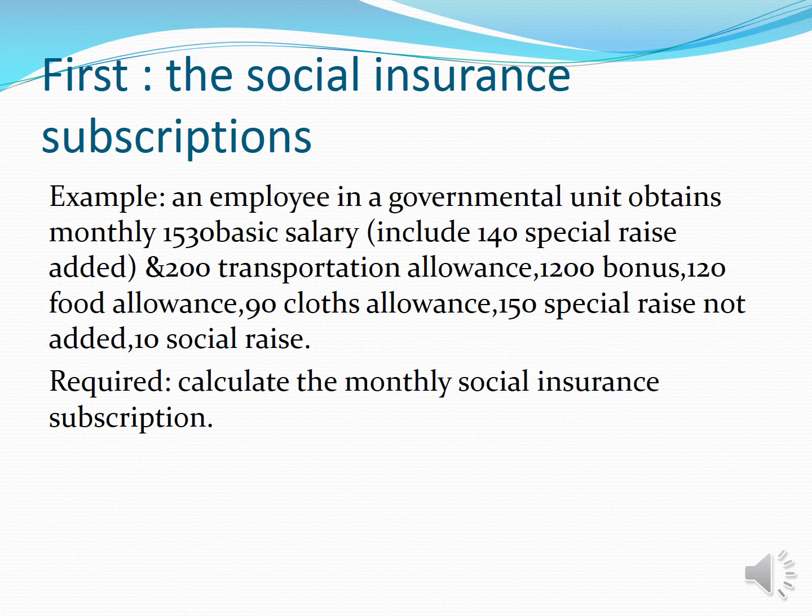The first monthly step: the social insurance subscription. Example: an employee in a governmental unit obtains monthly 1,530 basic salary including 140 special raise added, and 200 transportation allowance, 1,200 bonus, 120 food allowance, 90 clothes allowance, 150 special raise not added, and 10 social raise. Required: calculate the monthly social insurance subscription.